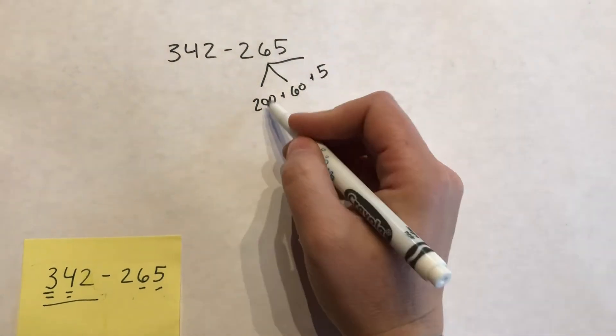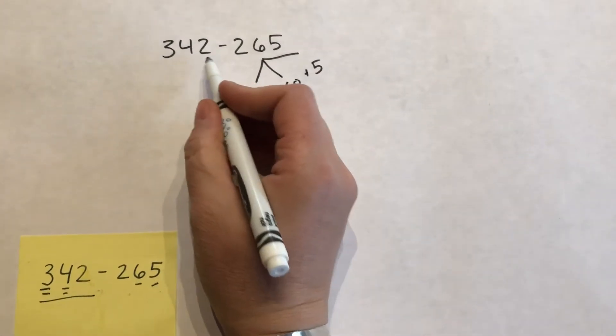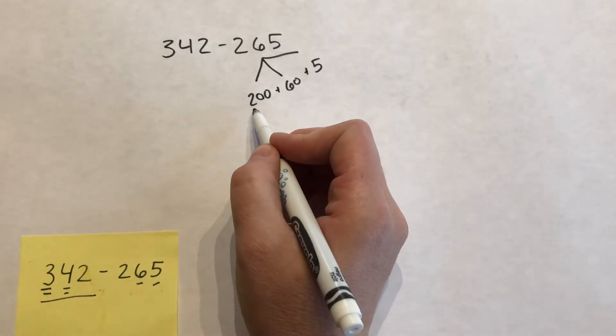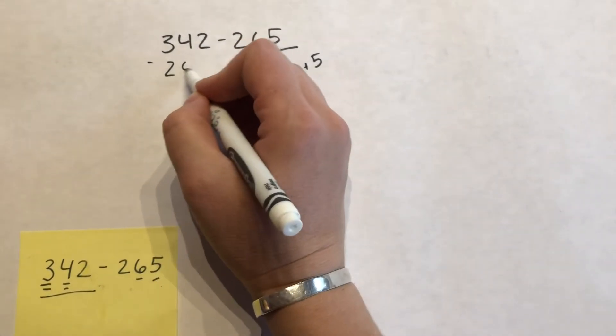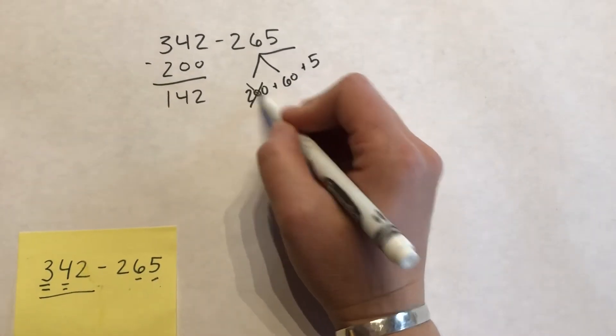And then you start taking these away from your beginning number. So 342 take away 200, it's going to get you to 142, so we took that away.